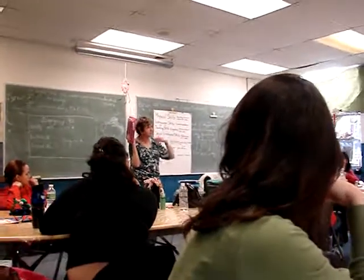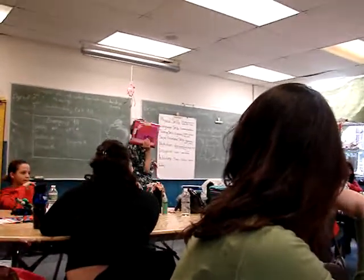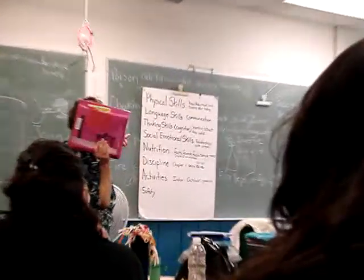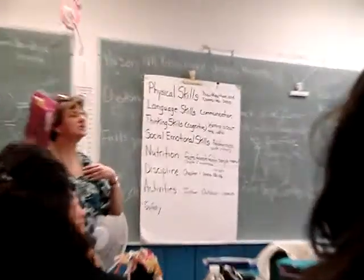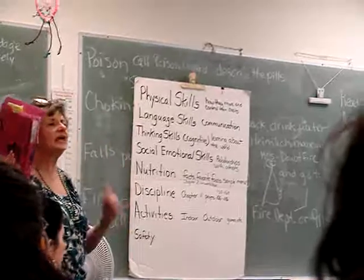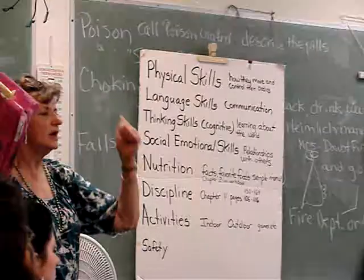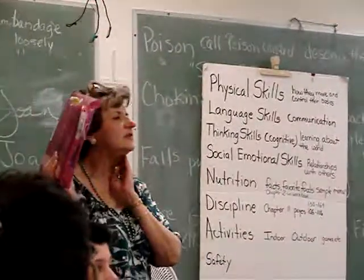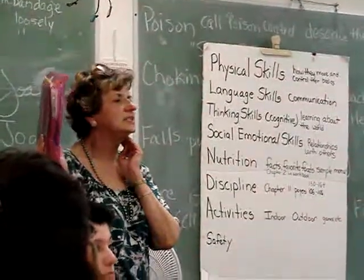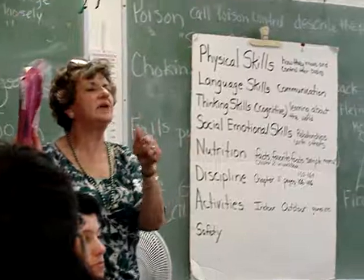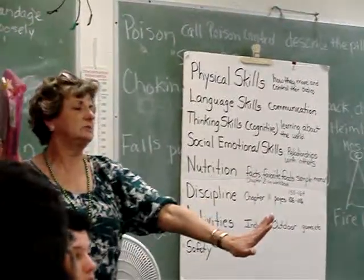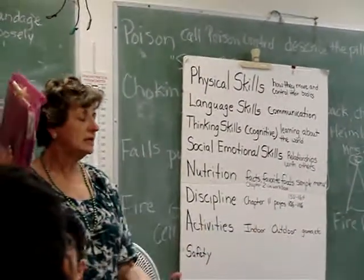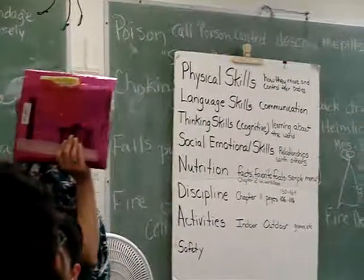A different process of learning takes place with social-emotional skills and how they relate to one another. Three- and four-year-olds will love to give you hugs and kisses. Seven- and eight-year-olds — don't touch me. They're different.